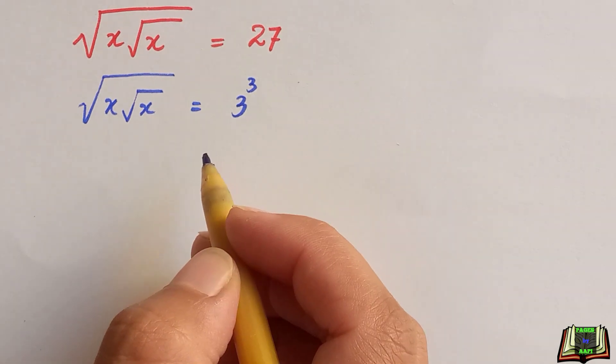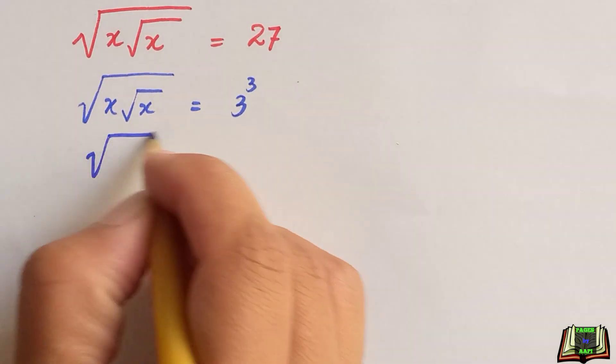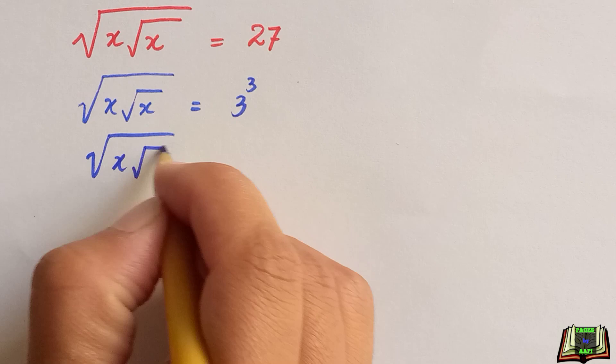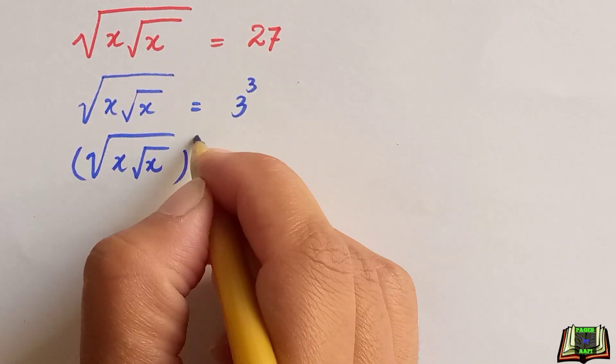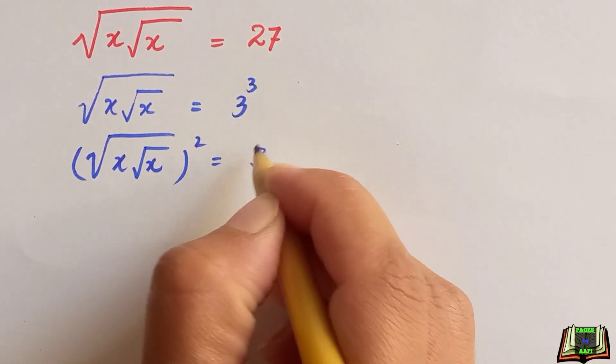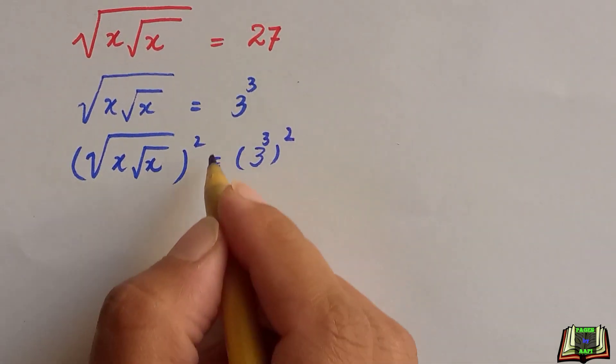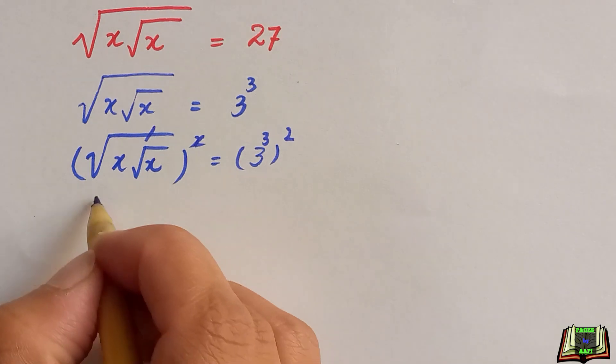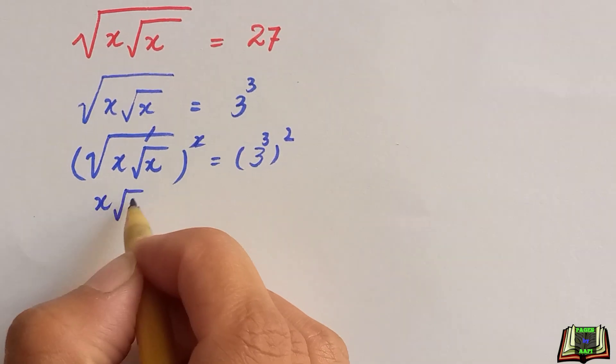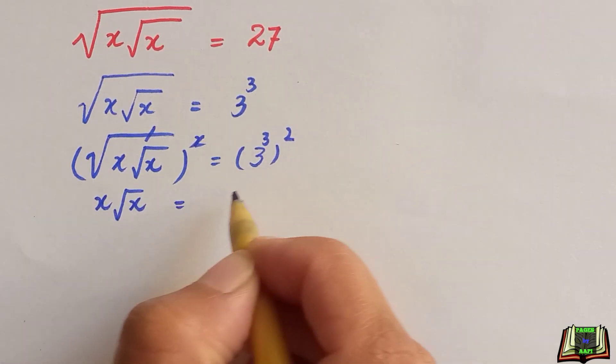At this step, we are going to take the square of this equation on both sides, 3 raised to power 3 whole raised to power 2. This square and root will be cancelled out. We are left with x times square root of x is equal to 3 raised to power...